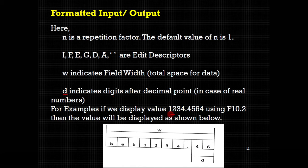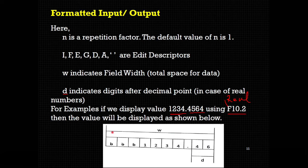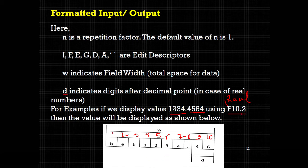Here is an example. Consider the number 1234.456 and we print it using f10.2. f means it is of real type so there will be a decimal point. 10 means 10 spaces are allotted. Now in those 10 spaces we write the number. Starting from the last, we cut two portions for the digits after the decimal point, then write a decimal point, then write the digits 4, 3, 2, 1 from right to left, leaving the remaining spaces blank. So we get the output with 2 digits after the decimal point within 10 total spaces.